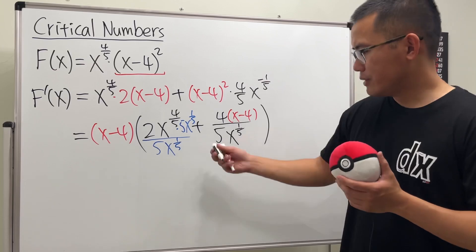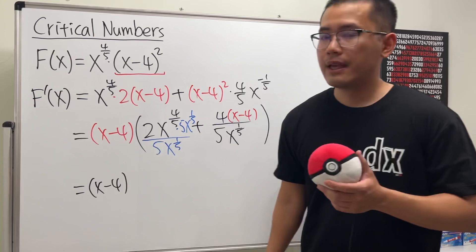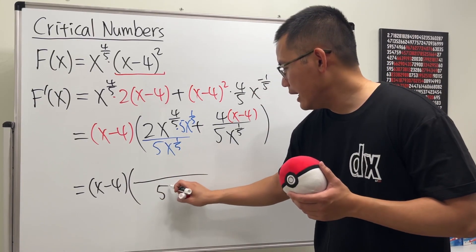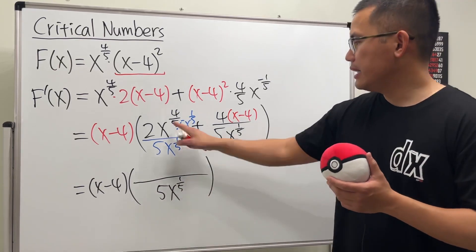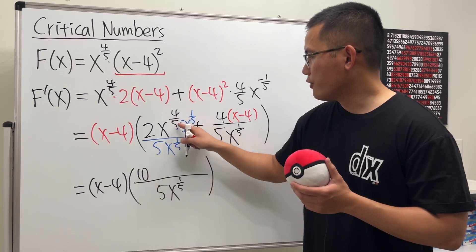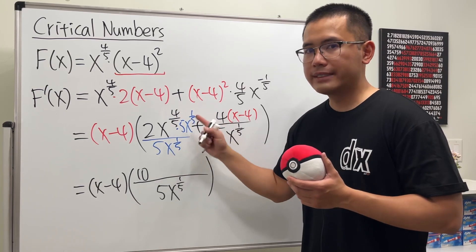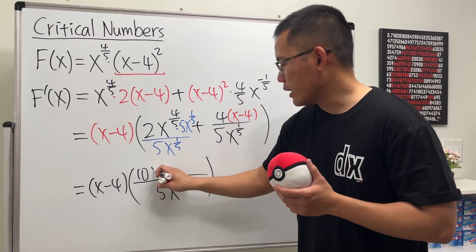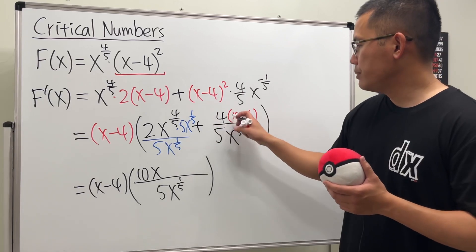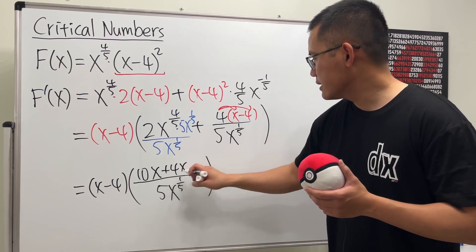It's not so bad though. We have the (x - 4), and then for the second part we'll have 5x^(1/5) on the bottom. On the top here, 2 times 5 is 10, and then x^(4/5) times x^(1/5)—we add the powers—4/5 plus 1/5 is 5/5, which is just 1, so x to the first power. Then we can also distribute this, so it becomes plus 4x and then minus 16.